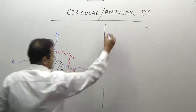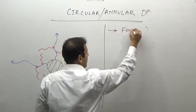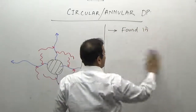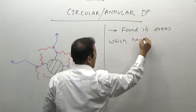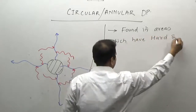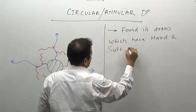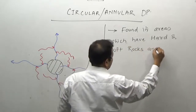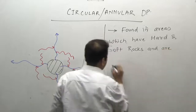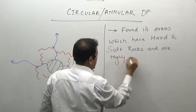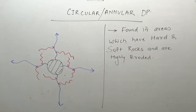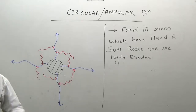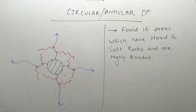Such a drainage pattern is known as a circular drainage pattern or annular drainage pattern. It is found in areas which have alternating hard and soft rocks and are highly eroded. In those areas of hard and soft rocks which are highly eroded, the streams develop in the form of a circle.